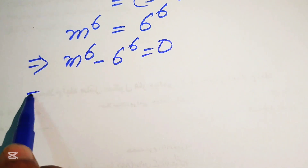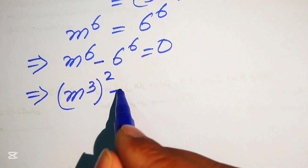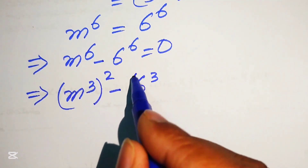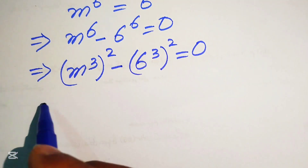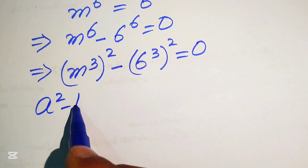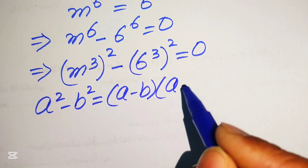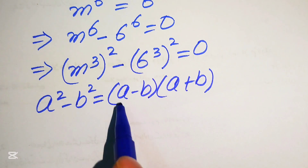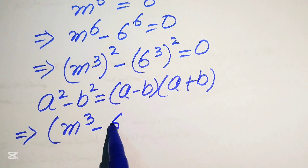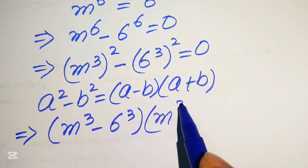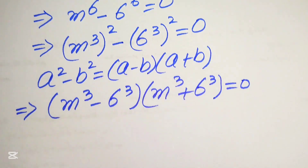We rewrite this equation by expressing m to the power of 6 as m cubed whole squared, and 6 to the power of 6 as 6 cubed whole squared, equals to 0. Using the formula a squared minus b squared equals a minus b times a plus b, we write this as m cubed minus 6 cubed times m cubed plus 6 cubed equals to 0.